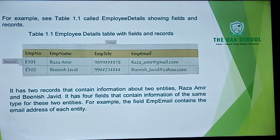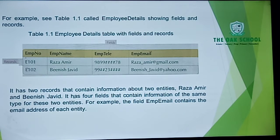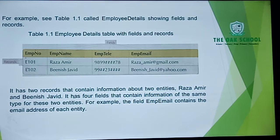This table has two records containing information about two entities — Raza, Amir, and Binish J. It has four fields that contain information of the same type: Employee Number, Employee Name, Employee Telephone Number, and Employee Email. It has four different categories and two different records. For example, the field Employee Email contains the email address of each entity.